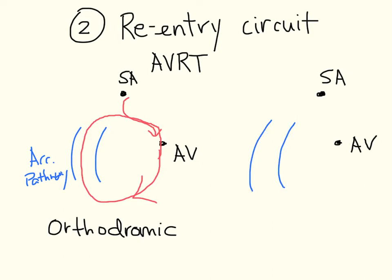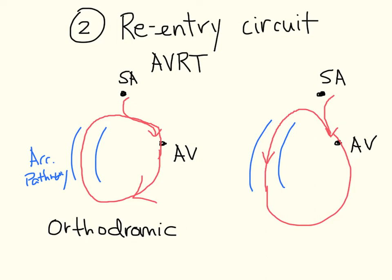The other, much less common form involves the SA node having an impulse going down, but instead of going through the AV node, the circuit goes through the accessory pathway and goes up the AV node, forming that kind of circuit. That is called antidromic conduction.